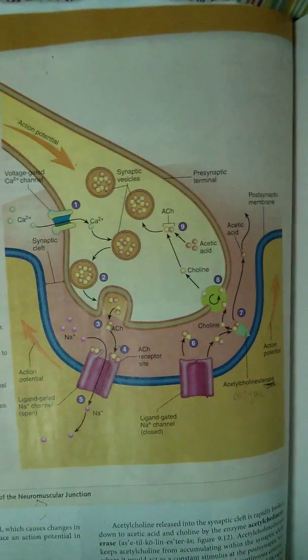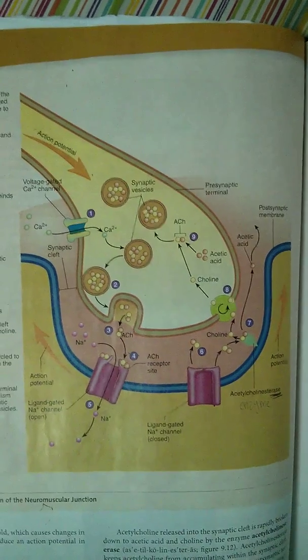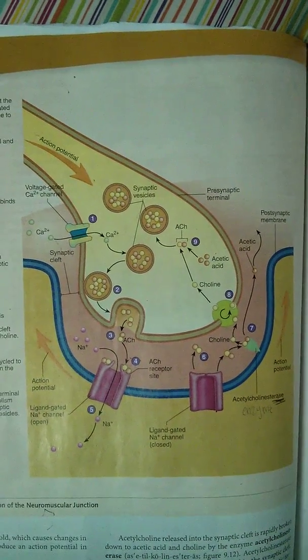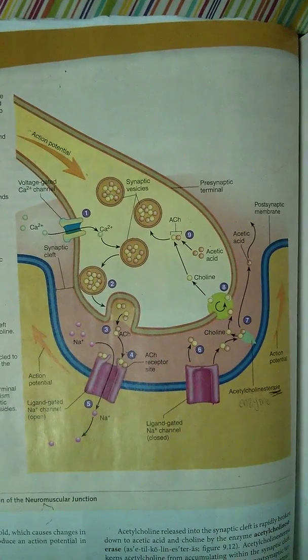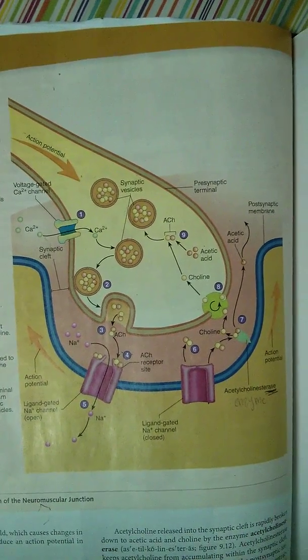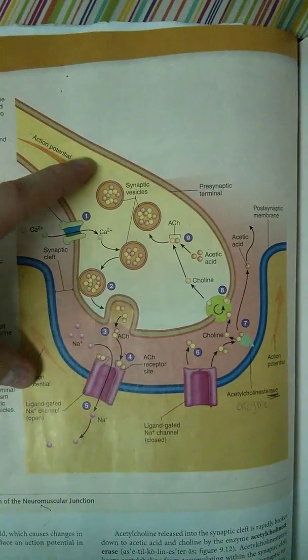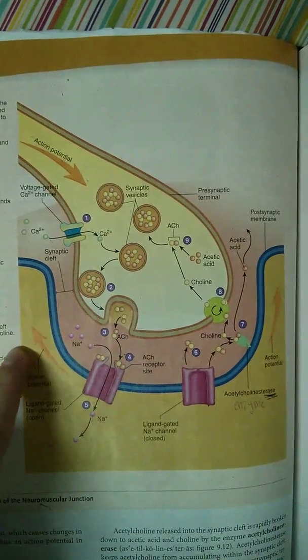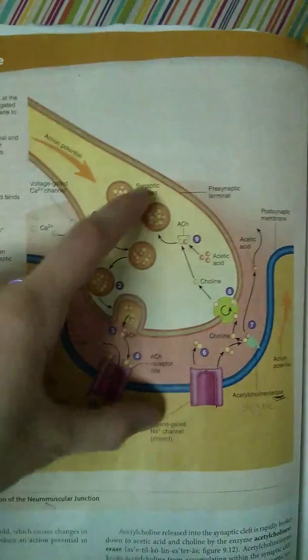So here we have basically the neuromuscular junction, which just means junction is where two things meet. So neuromuscular junction is where the nerve here meets the muscle, so that's hence neuromuscular junction, where they meet together.